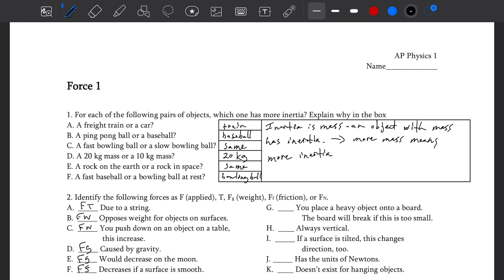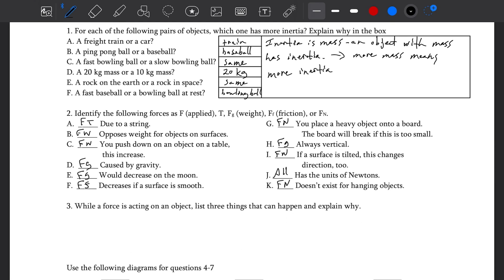Caused by gravity? Gravity. Would decrease on the moon? Gravity. Decrease if the surface is smooth? Friction. Normal would break if it's too weak, the board would break. Always vertical? Gravity. Surface is tilted, changes direction? Normal. They all have newtons. It doesn't exist for hanging objects? Normal, because it needs a surface.